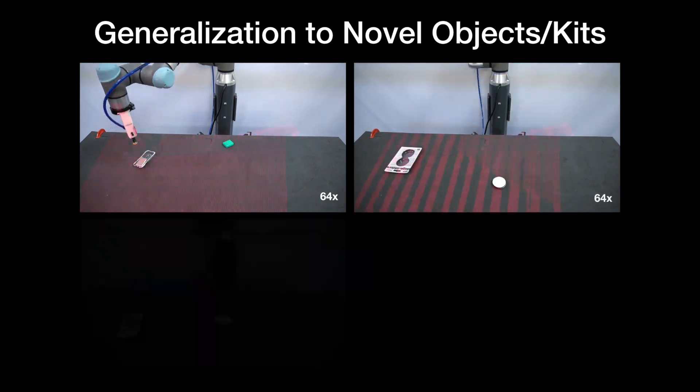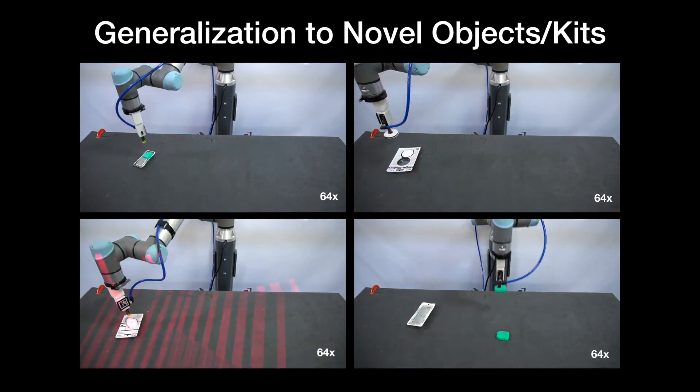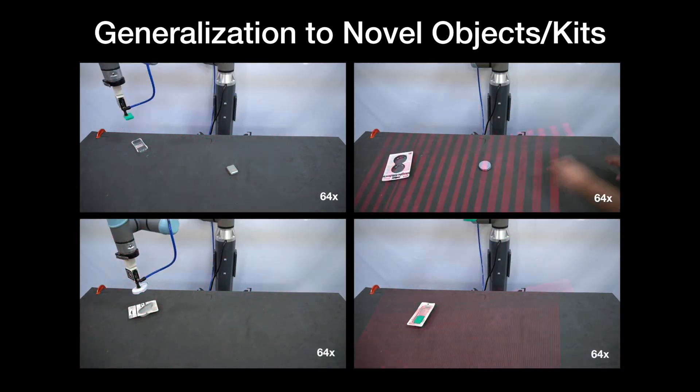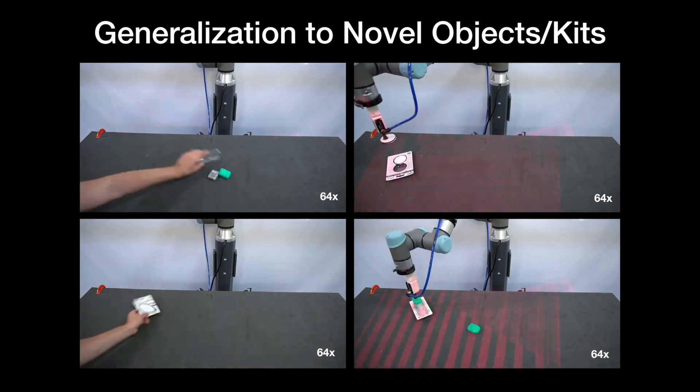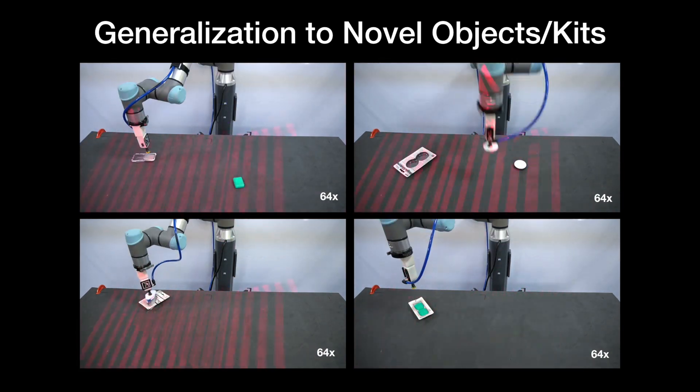Finally, we study how well our system can generalize to novel objects and kits. Here, we show that while our system has never before seen the following single and multi-object kits, it is able to successfully assemble them with a rate exceeding 86%.